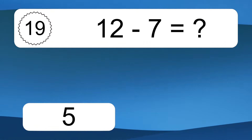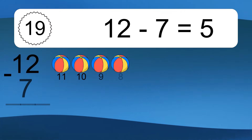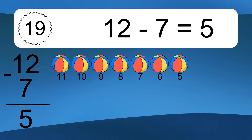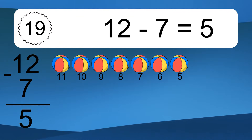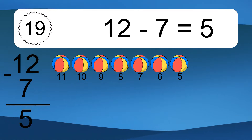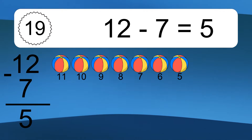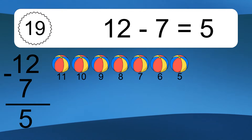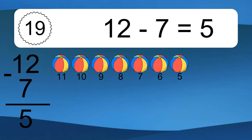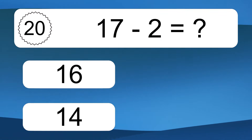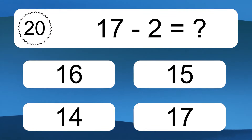12 minus 7 equals 5. Let's count it: 11, 10, 9, 8, 7, 6, 5. 17 minus 2 equals what?